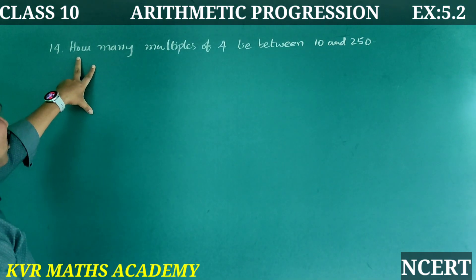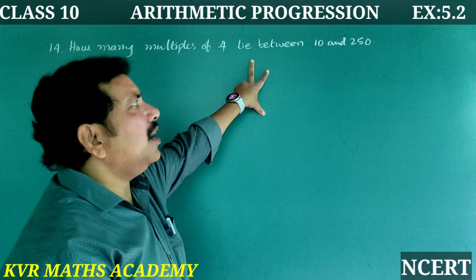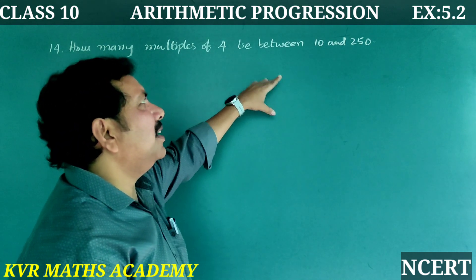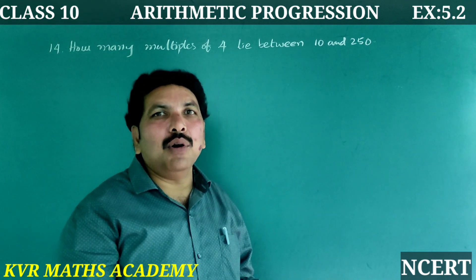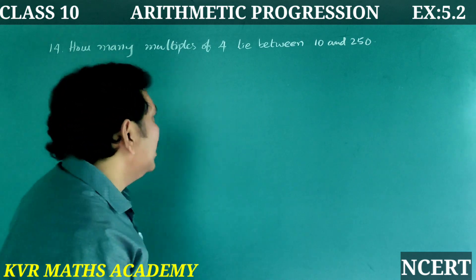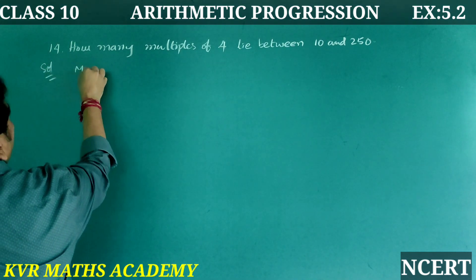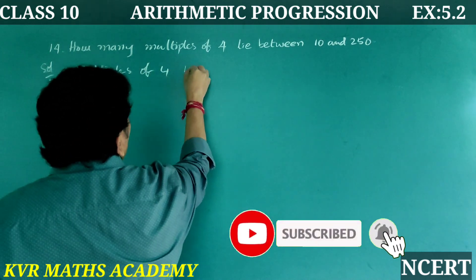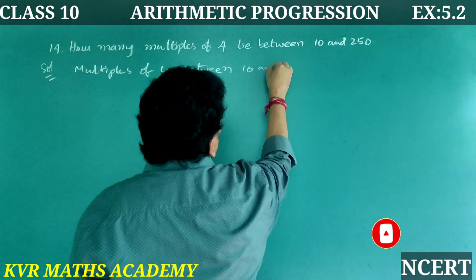This is the 14th question: How many multiples of 4 lie between 10 and 250? The multiples of 4 between 10 and 250 — let's find the solution.